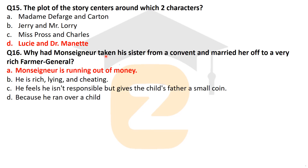The next question: why does Monseigneur take his sister from a convent and marry her off to a very rich former general? Because Monseigneur is running out of money. That is why he took his sister from a convent and married her off to a very rich former general.